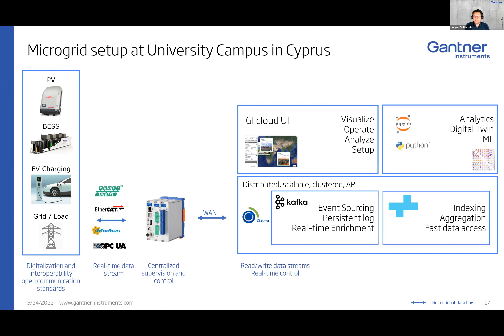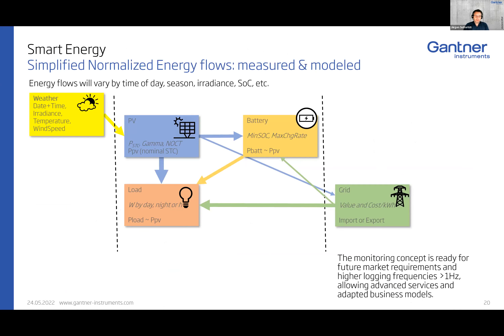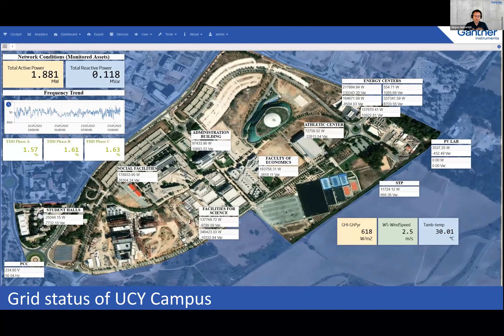When we focus on how energy flows for each second, we see that for each timestamp there is a defined energy flow: from weather, solar energy generating power, loads consuming, a battery charging or discharging, and the grid either consuming or injecting. We calculate the energy flow per timestamp to know what's going on — that's step one for a smart grid. In our cloud front end, we can see the campus of the University with different facilities, showing 1.8 MW of active power running, with full data acquisition covering all smart meters and weather stations.